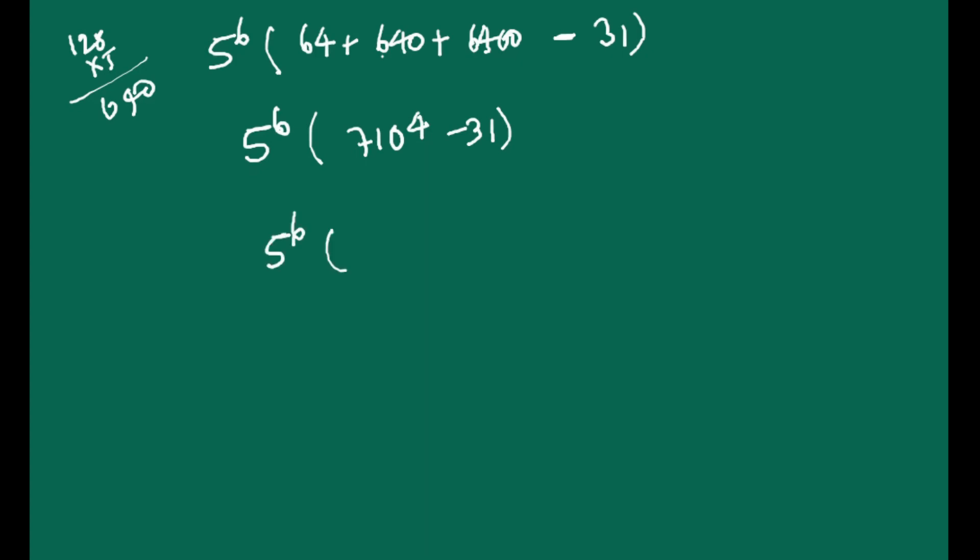When you solve this, five to power six into 7104 minus 31, that means if you subtract it, it becomes 3, 10, 3, 7, 7, 0, 7, 3.